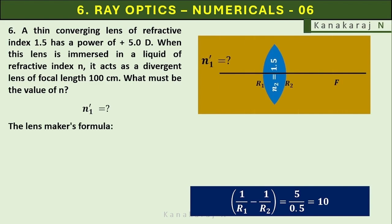Lens maker's formula says that 1 upon f prime equals n2 upon n1 prime minus 1 multiplies 1 upon r1 minus 1 upon r2.